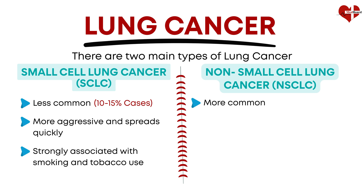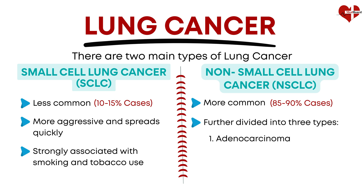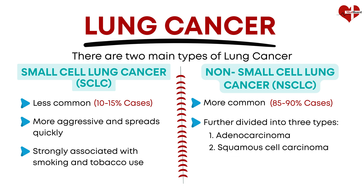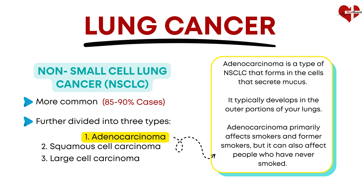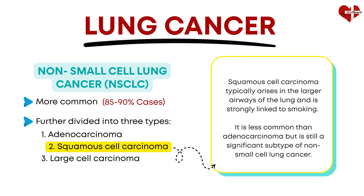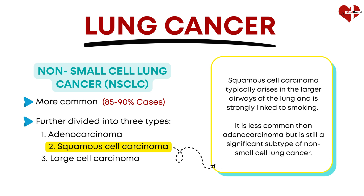Non-small-cell lung cancer, on the other hand, accounts for about 85 to 90% of all lung cancer cases. It is further classified into three subtypes: adenocarcinoma, squamous cell carcinoma, and large-cell carcinoma. Adenocarcinoma is the most common subtype and usually develops in the outer parts of the lung; it is often found in non-smokers and tends to grow more slowly. Squamous cell carcinoma typically arises in the larger airways and is strongly linked to smoking. It is less common than adenocarcinoma but is still a significant subtype.